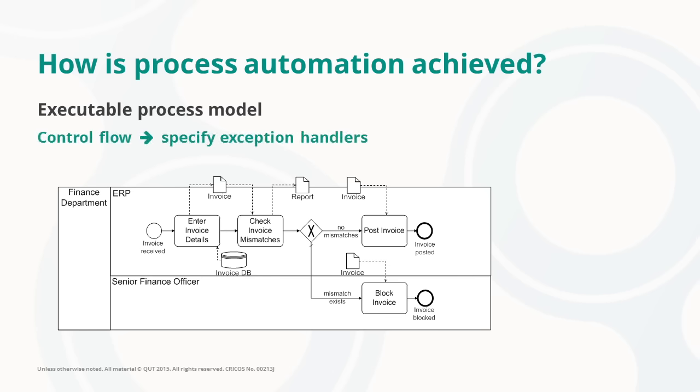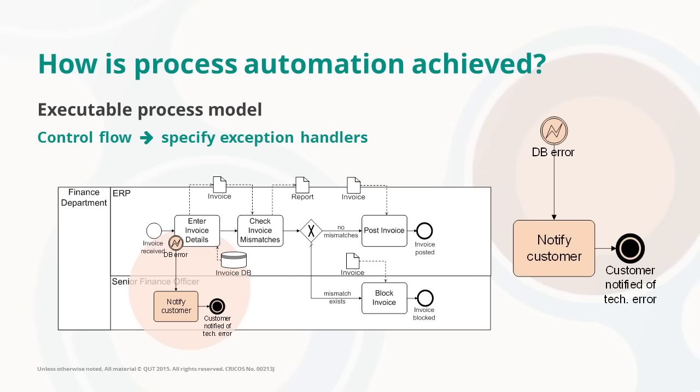As far as the control flow is concerned, it's not enough to specify the process behaviour in the normal case, when everything goes well. It is very important when it comes to executable process models to specify all possible exceptions that may arise when executing this business process. For example, in the context of this process for handling invoices, the first activity entering invoice details may lead to technical issues.